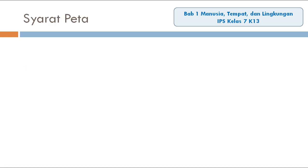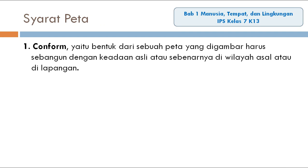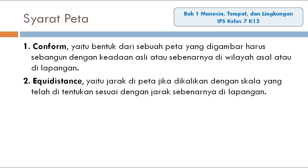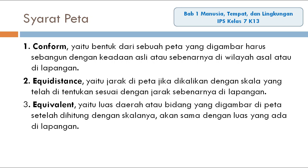Suatu PETA harus memenuhi kriteria syarat PETA. Yang pertama, konform, artinya bentuk dari sebuah PETA yang digambar harus sebangun dengan keadaan asli atau sebenarnya di wilayah asal atau di lapangan. Yang kedua, equidistan, yaitu jarak di PETA jika dikalikan dengan skala yang telah ditentukan sesuai dengan jarak sebenarnya di lapangan. Yang ketiga, equivalent, artinya luas daerah atau bidang yang digambar di PETA setelah dihitung dengan skalanya akan sama dengan luas yang ada di lapangan.